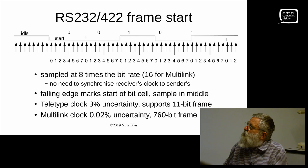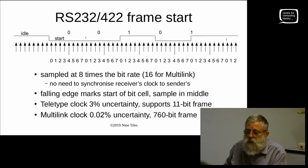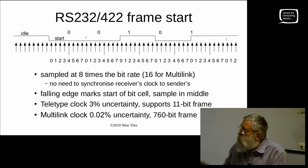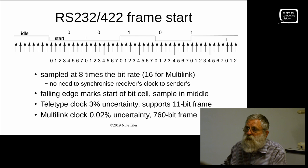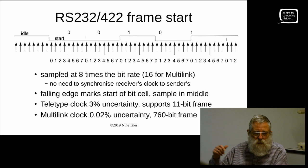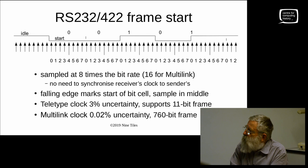In our case we had a crystal clock which, without doing anything fancy, gives you 100 parts per million — 0.01%. So the sender might be 0.01% fast and the receiver 0.01% slow, but you can still go 760 bits before you're getting too far from the sampling point. That's what we did, and that was why we had a packet size of that length.